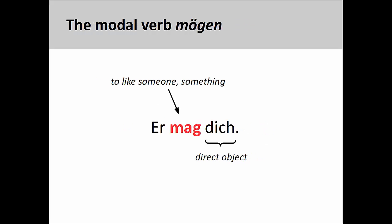The modal verb mögen means to like someone or something. Although it can be used with an infinitive in some contexts, most of the time it will be used only with a direct object — er mag dich, he likes you. This is the only modal verb that is not regularly used with an infinitive.